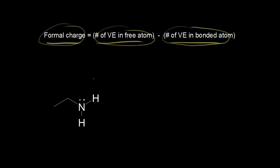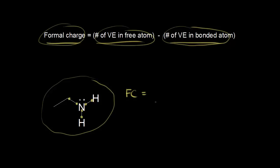Let's assign a formal charge to the nitrogen in this molecule. Remember that each bond represents two electrons, so I'm going to draw in the electrons in this bond to make it easier to assign a formal charge to the nitrogen. Formal charge equals the number of valence electrons that nitrogen is supposed to have. We know nitrogen is supposed to have five valence electrons because of its position on the periodic table, so this is five. From that, we subtract the number of valence electrons that nitrogen has in our drawing.